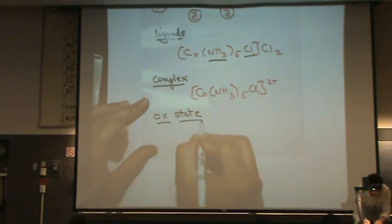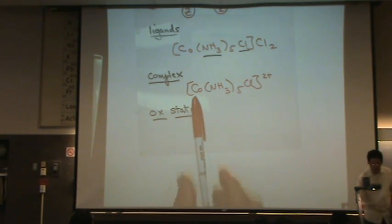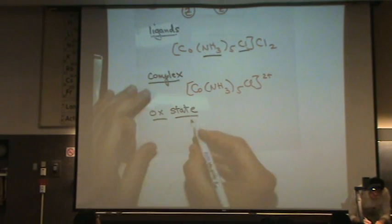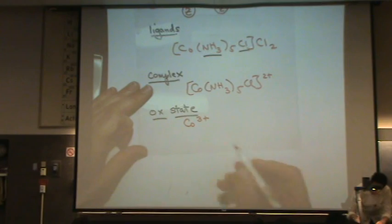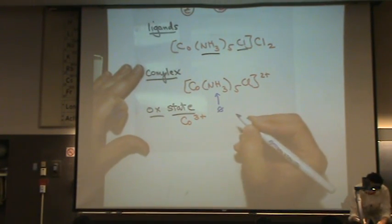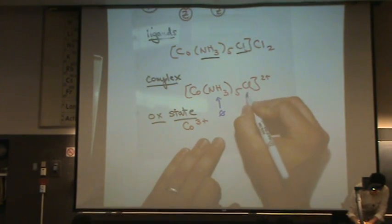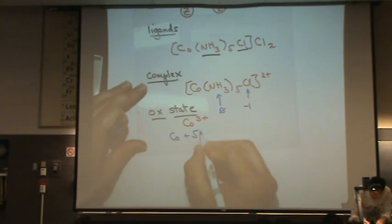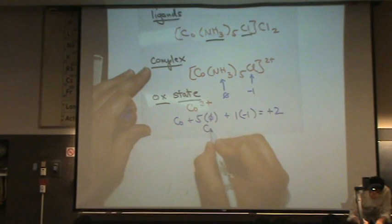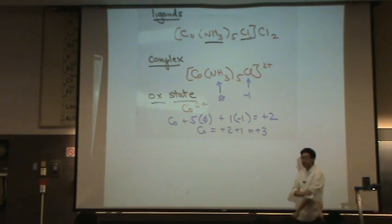Next: oxidation state. Let's find the oxidation state of cobalt in the compound I just wrote. The answer is +3. Here's how: the charge on ammonia is zero; NH3 is neutral. The charge on chlorine is −1. Set up the equation: Co + 5(0) for the ammonias + 1(−1) for the chlorine ligand = overall charge of +2. So Co − 1 = +2, meaning Co = +3. You need to be able to find the oxidation state in any coordination compound or complex ion.